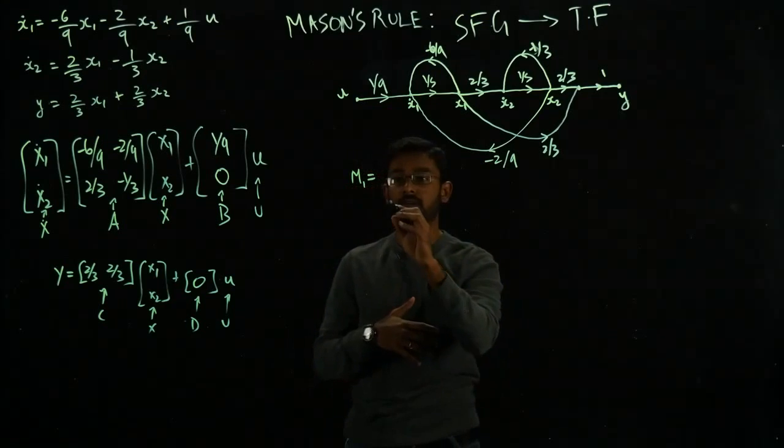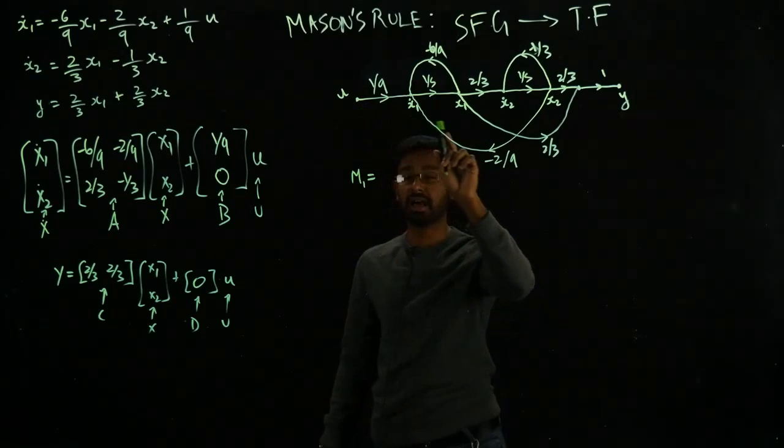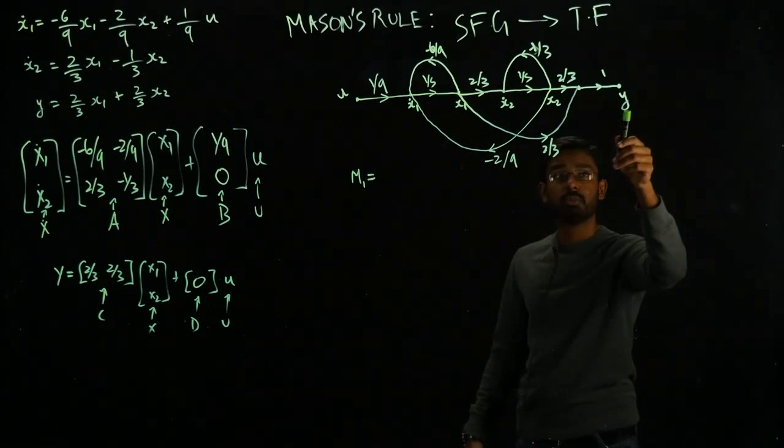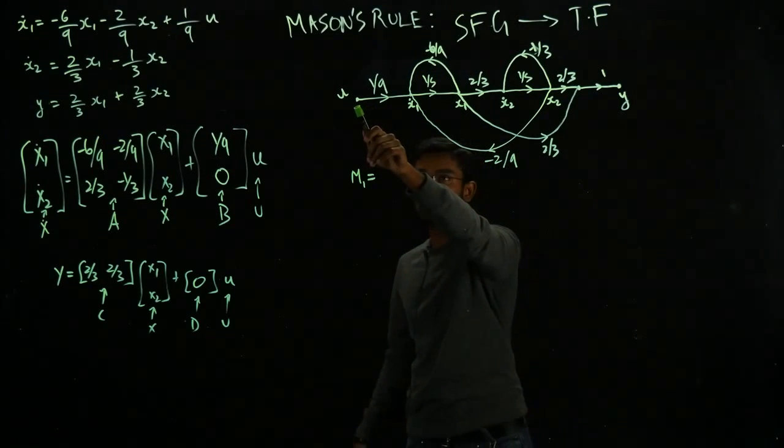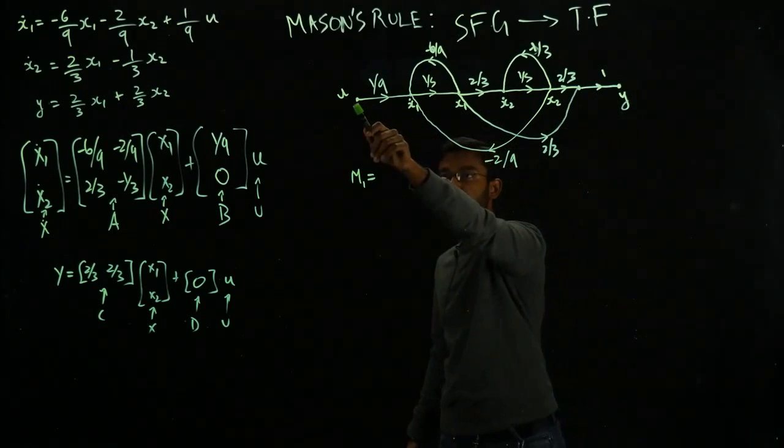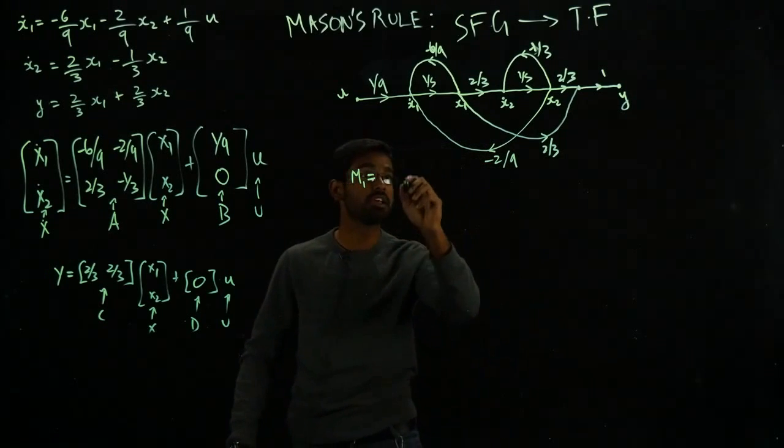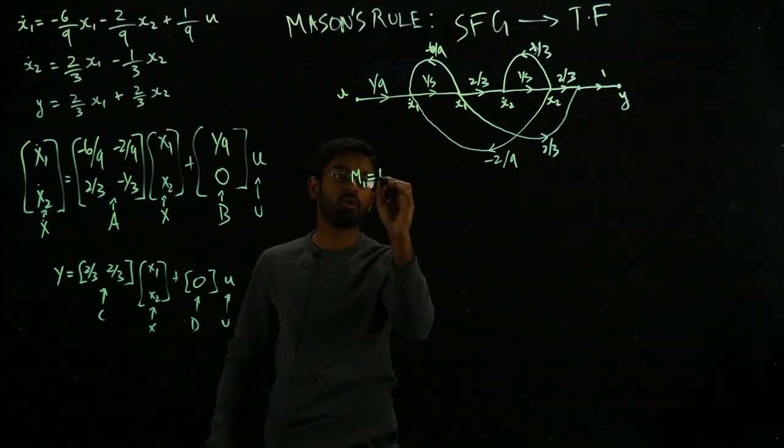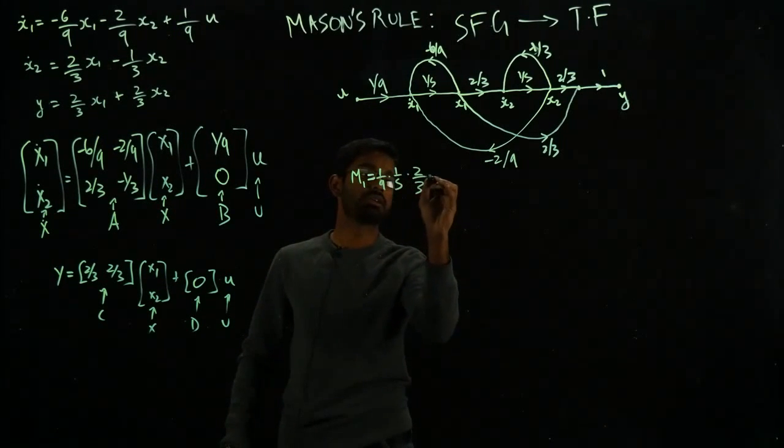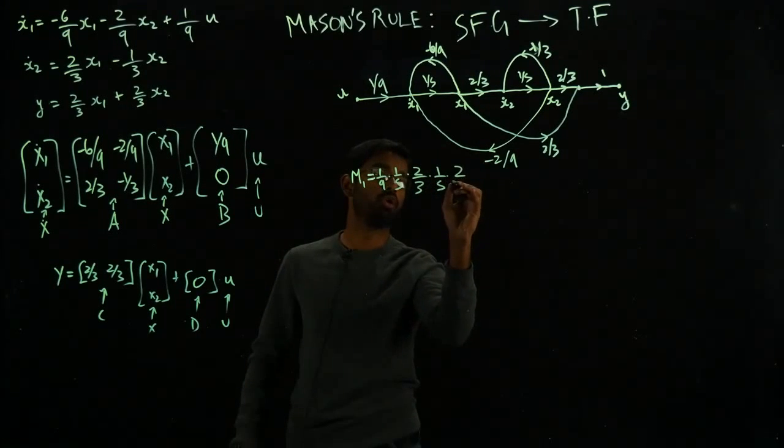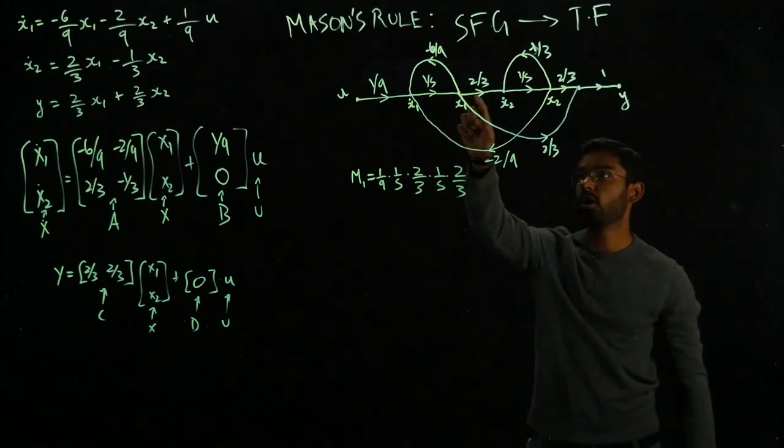I'm going to call it M1, which is the first straight path to the output. I'm going to be identifying what are the different ways I can reach to my output without any form of feedback or without going back in direction. One obvious answer is this straight line right here. I can start from U and simply go through this graph and reach Y. That is the first straight line path. I'm going to write it as 1 over 9 times 1 over S times 2 over 3 times 1 over S times 2 over 3. Just a straight path and I'm multiplying all the gains of those paths.